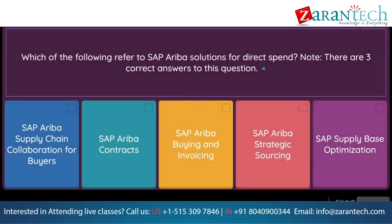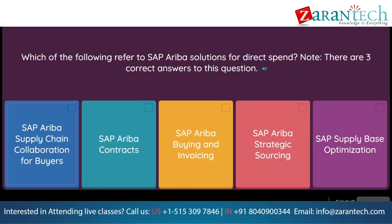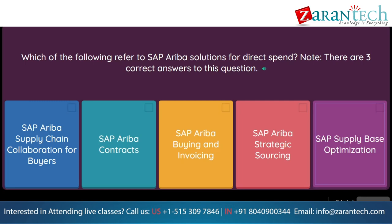Question: Which of the following refer to SAP Ariba solutions for direct spend? Note, there are three correct answers to this question. Option 1: SAP Ariba Supply Chain Collaboration for Buyers. Option 2: SAP Ariba Contracts. Option 3: SAP Ariba Buying and Invoicing. Option 4: SAP Ariba Strategic Sourcing. Option 5: SAP Supply Base Optimization.